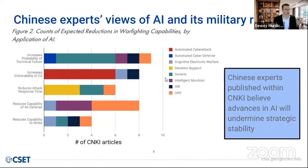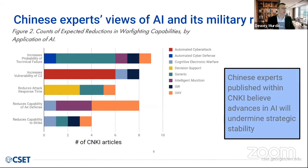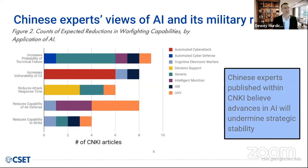We also found areas where the authors were very concerned about what AI could do — something not often highlighted. It could increase the probability of technical failure; about nine authors were very concerned about this. Increasing vulnerabilities to command and control systems and air defense systems were relevant areas. They also tended to overplay what the US's capability was and the likelihood of being able to use AI in our own military operations. These are really important characteristics that was only possible by digging into the CNKI literature.